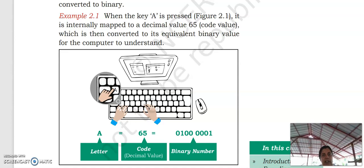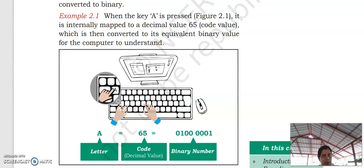this A is converted to a decimal value. Decimal value means the values which are used by us — we are using 1, 2, 3, 4, 5. Decimal systems are what we follow in mathematics. So the corresponding decimal value of A is 65. We will tell why it is 65 in the next section. But this decimal value is also not understandable by the computer.